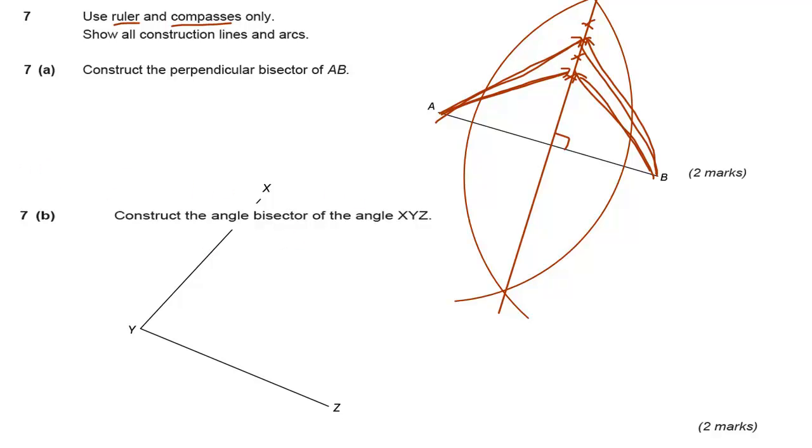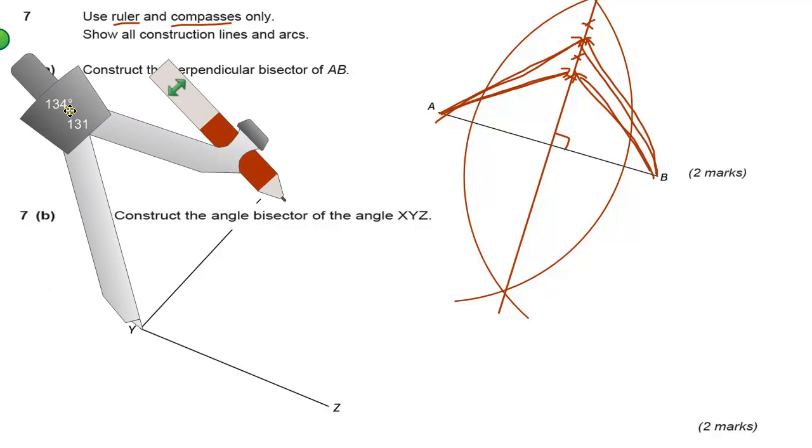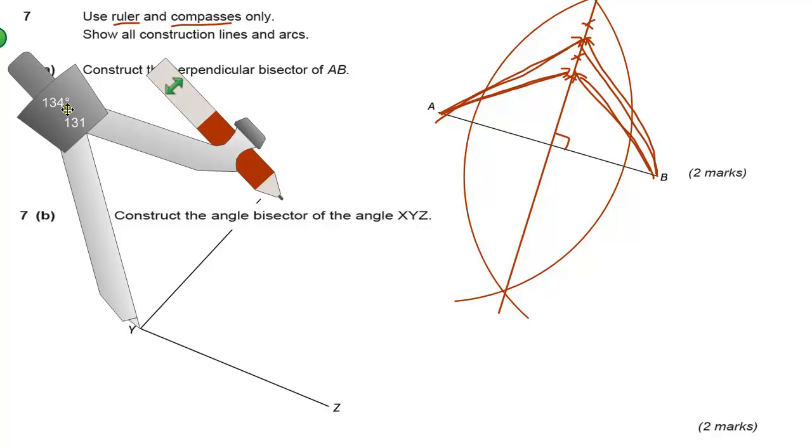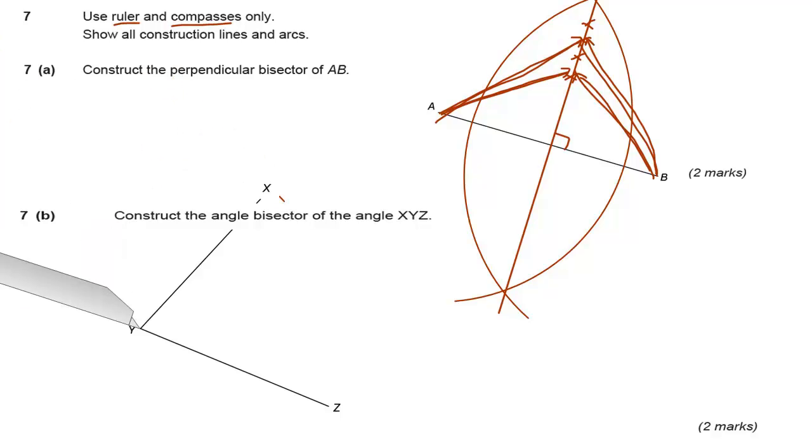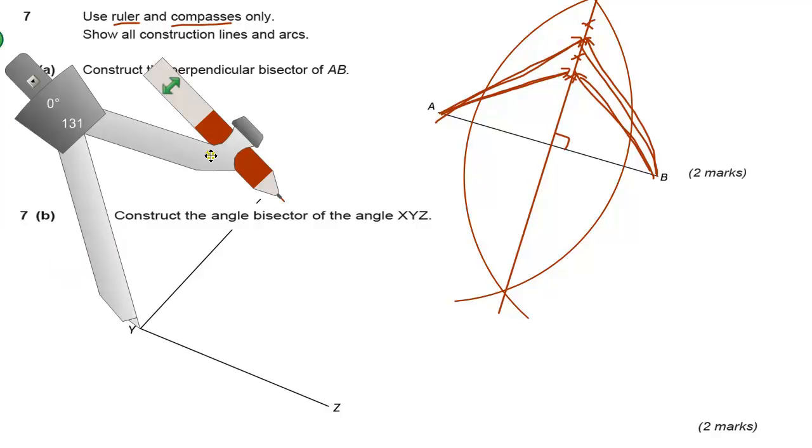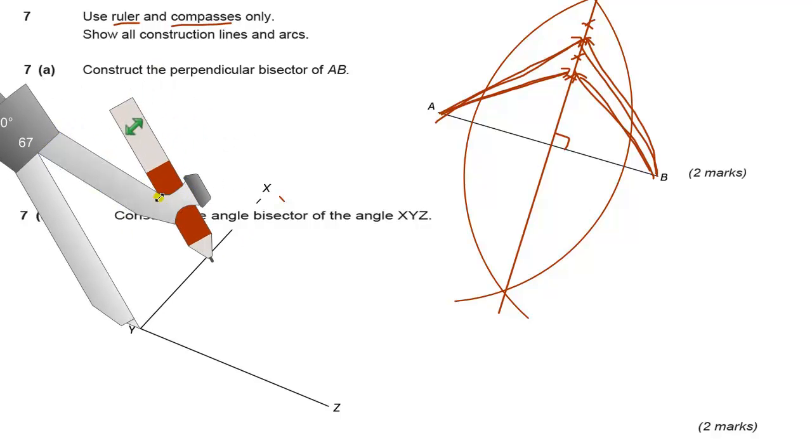An angle bisector is very similar, but we have to draw the line that is halfway between this angle. Now, you could use a protractor to do that. The problem with that is if you don't have any construction lines on, you won't get the marks for it.